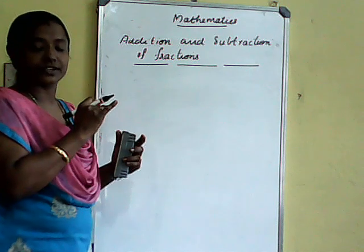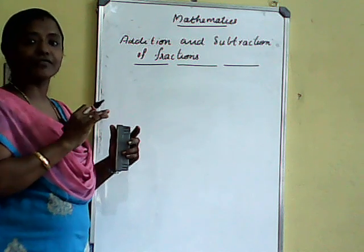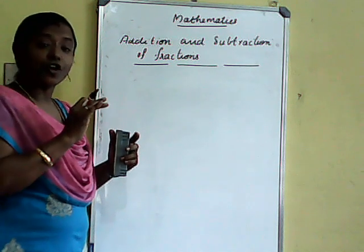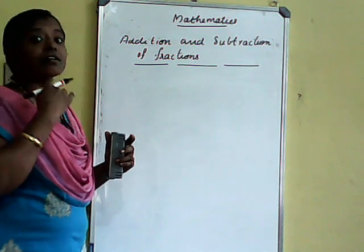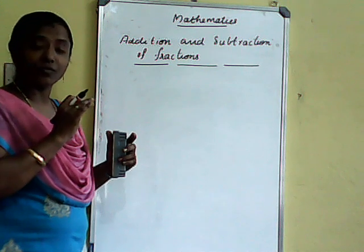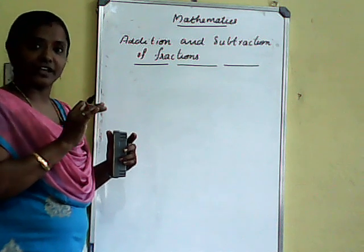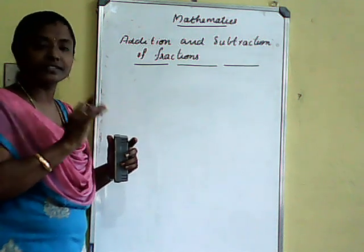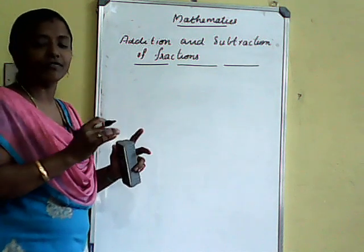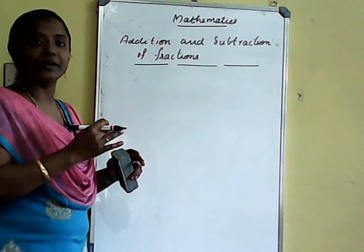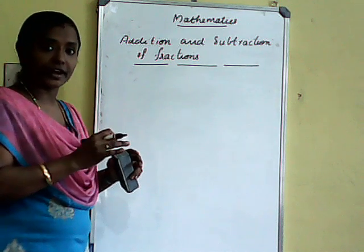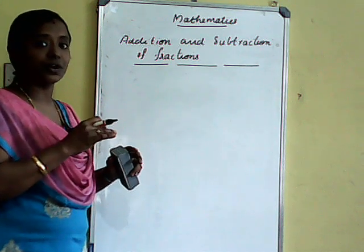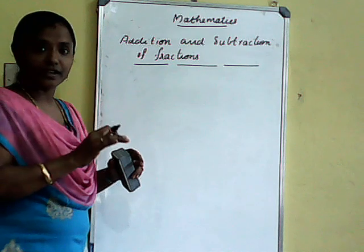Like and unlike fractions. Like fractions means what? Denominators are same — that fraction is said to be like fractions. What is unlike fractions? Just the opposite of like fractions. That is, denominators are different. Then the fraction is known as unlike fractions.